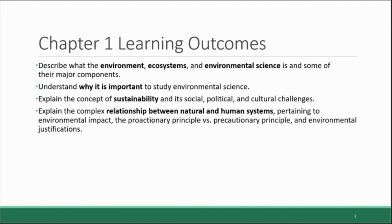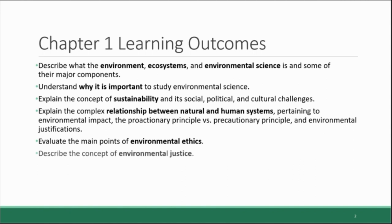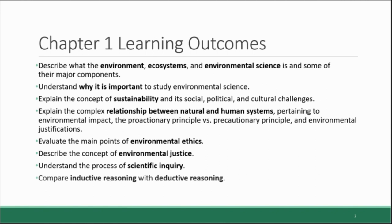There are competing ideas about how decisions should be made about the environment, including two philosophies called the proactionary principle and the precautionary principle. We will also look at how we as humans justify the different ways that we interact with the environment, leading into a conversation about ethics — what is the right way for humans to interact with the environment — and about environmental justice, or what is the fair way. Finally, we'll look at the process of scientific inquiry, compare different types of scientific reasoning, and distinguish between basic science and applied science.